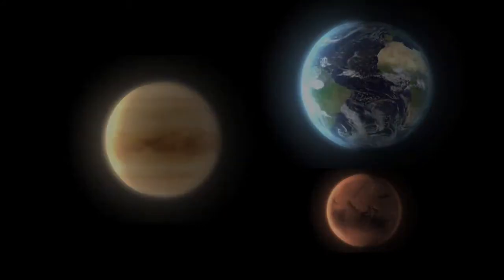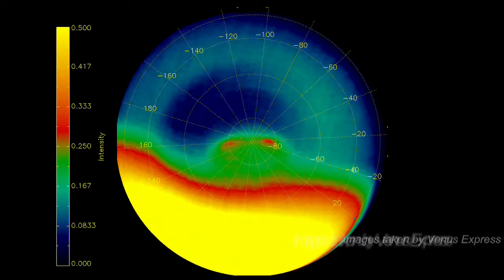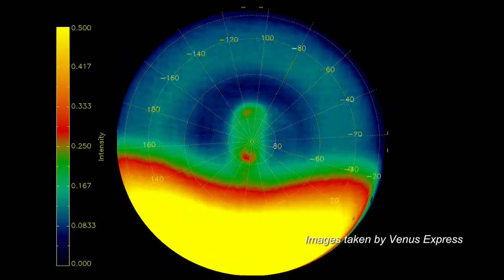Unlike the slow rotation of the planet, the top of the Venusian atmosphere whips around in just four days.